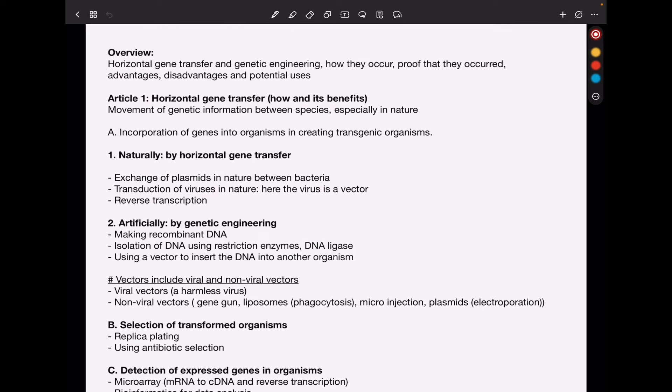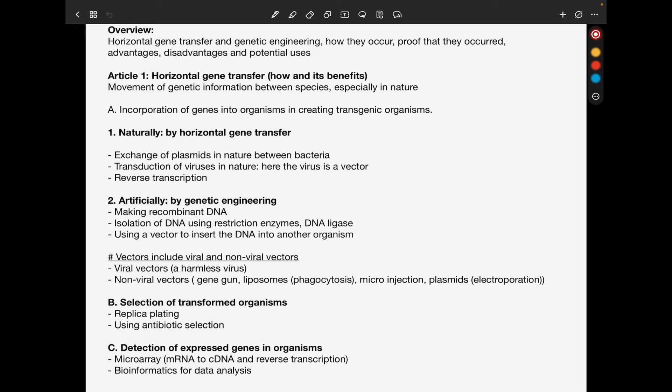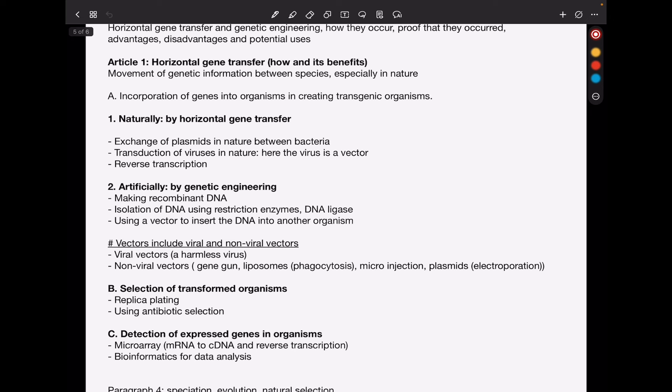So here is my overview about the articles, and again, we have three articles linked into one. They are focusing on horizontal gene transfer, genetic engineering, how they occur, proof that they occurred, advantages, disadvantages, as well as the potential uses. So the possible topics to focus on from Article 1, which focuses on horizontal gene transfer. The definition of horizontal gene transfer, this is movement of genetic information between species, especially it occurs in nature. The first part, we can look at incorporation of genes into organisms in creating transgenic organisms. This occurs in two ways. The first could be natural.